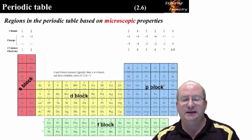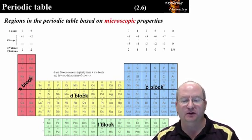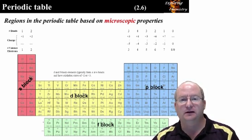The regions of the periodic table based on the microscopic properties of the elements is actually easier to understand, and provides an explanation for the interesting block structure of the periodic table. We have the S block, P block, D block, and F block.